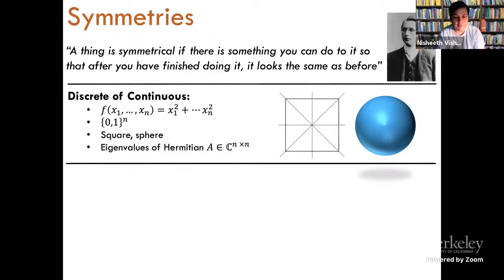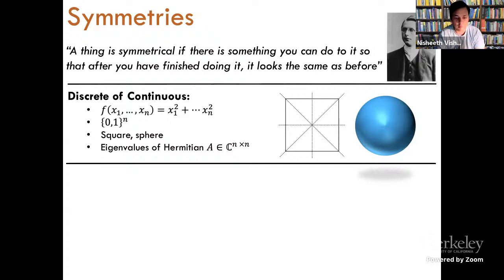Going back thousands of years, people realized symmetries of objects like squares, which you can rotate by 90 degrees, 180 degrees, and so on — it doesn't really change the square itself. A sphere is a continuous object which has a continuous set of symmetries; you can rotate it by an arbitrary amount and it remains invariant. More relevant to this talk are matrices, in particular complex Hermitian matrices. The eigenvalues are all real for such matrices, and if I conjugate these matrices by unitary matrices, the eigenvalues don't change.